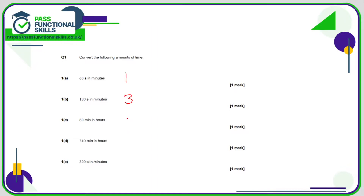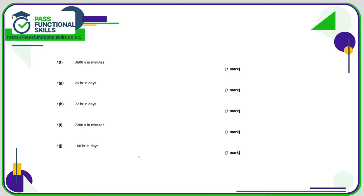60 minutes in hours: that is one hour. 240 minutes divided by 60 is four hours. We know there are 60 seconds in a minute, so 300 divided by 60 is five minutes. For 3600 seconds in minutes: 60 seconds equals one minute, so 3600 divided by 60 is 60 minutes.